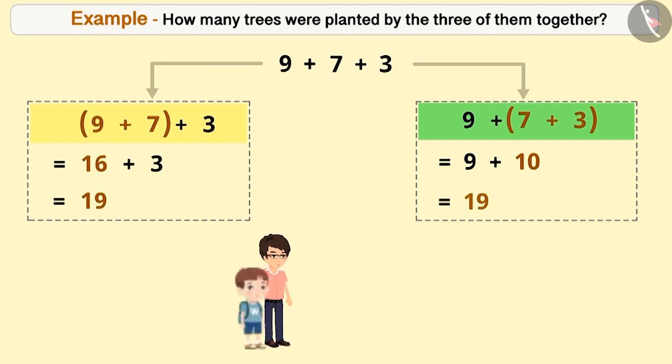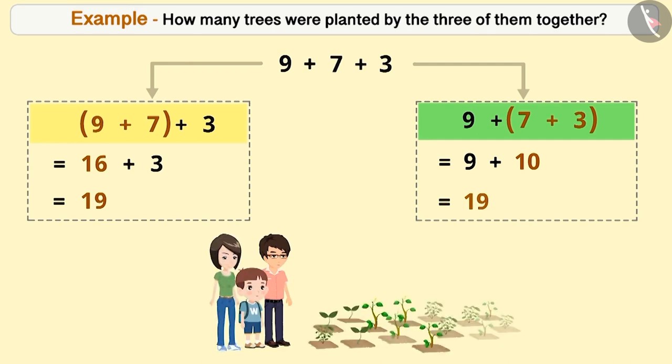In both methods, the total number of trees planted by Akash, Ajay, and Babita will be 19.